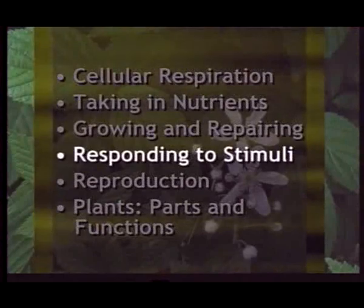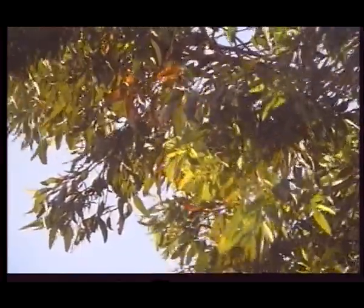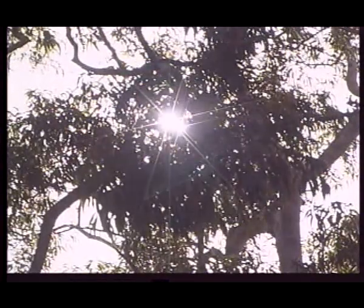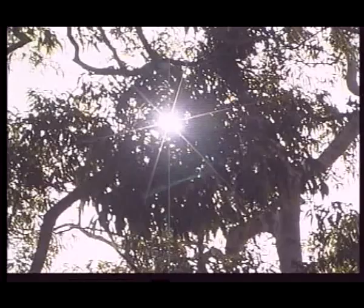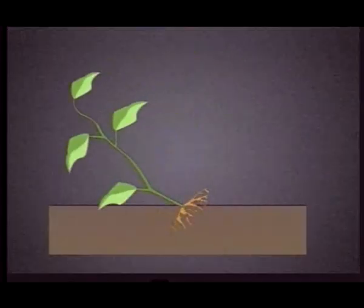Another characteristic of living organisms is their ability to respond to stimuli. For us, these responses are controlled by the nervous system, which sends messages to and from the brain about the stimuli. Plants also respond to stimuli. Light is an important stimulus for most plants — they grow towards it. Plants also respond to gravity. If a plant tips over, its roots will continue to grow downward.